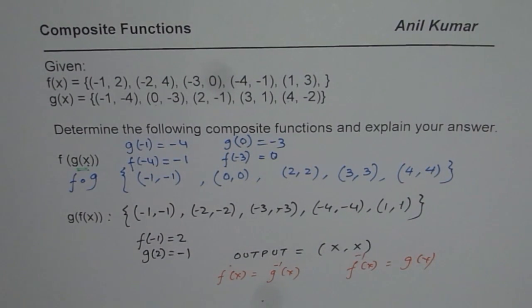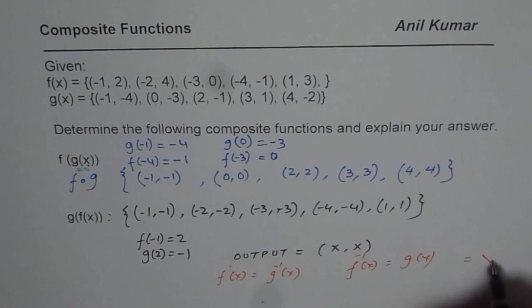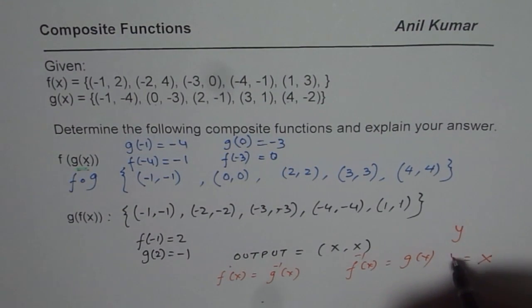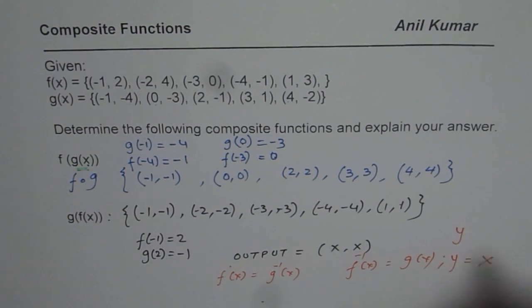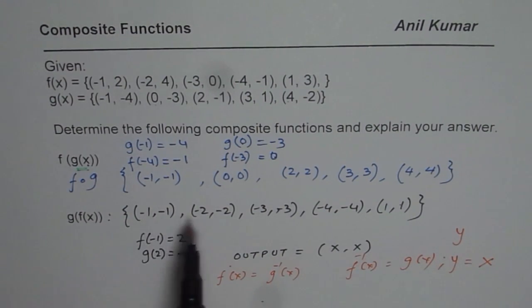So if you would have had a continuous function, in that case, the result would have been equal to x. So for every x input, y equals x, straight line. Now, but what we have are points on the straight line y equals x. That is what we have got.